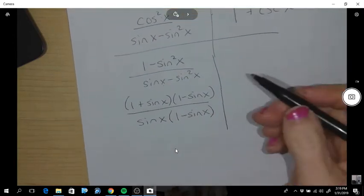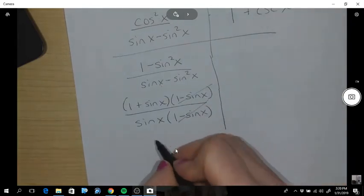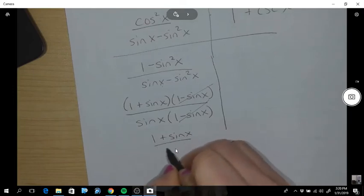And now I can show that those cancel. And then I get 1 plus sin x over sin x.